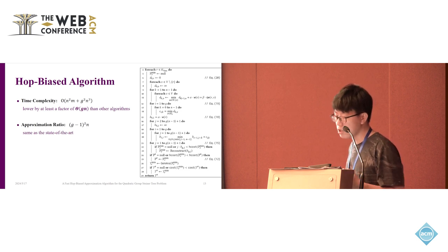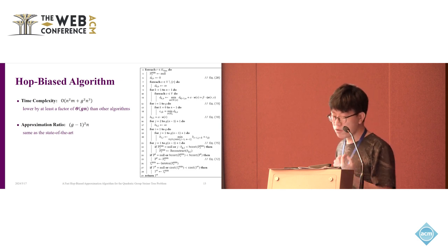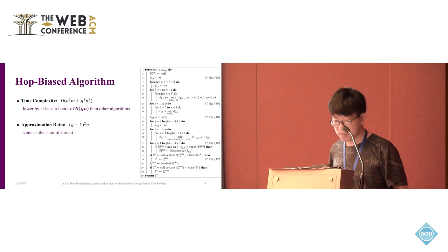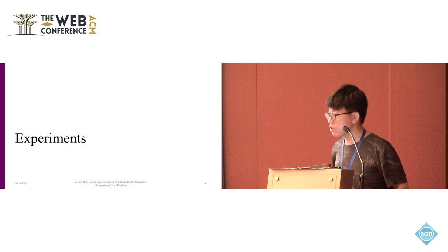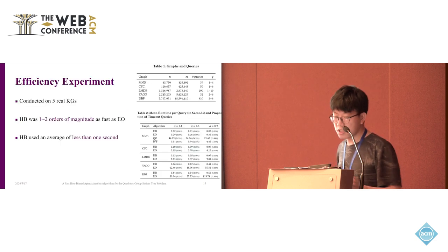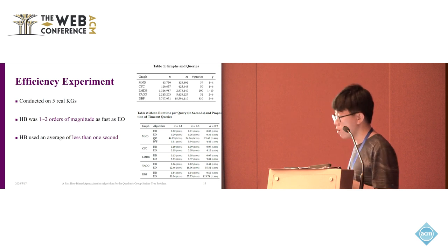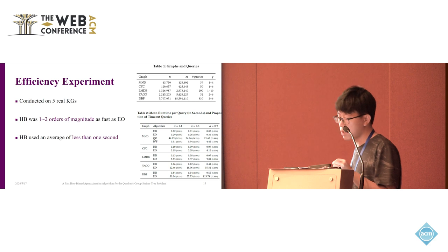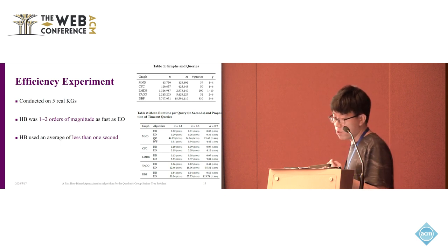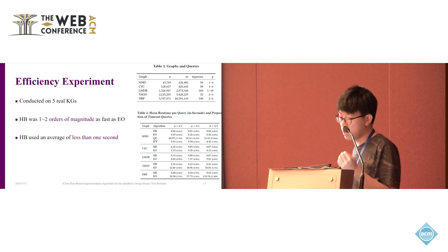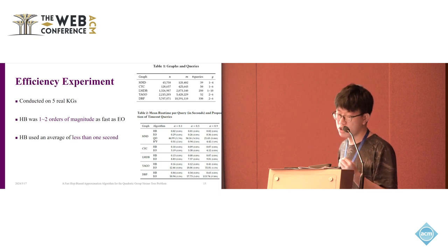In conclusion, the time complexity of the HB algorithm is lower by at least a factor of Gn than other algorithms. We prove that the HB algorithm has the approximation ratio guarantee, which is the same as the state of the art. Next, we conduct a serious experiment to measure the HB algorithm. The first is the efficiency experiment. We conduct this experiment on 5 real KGs, and table 2 shows its mean runtime on these KGs. We can find that HB was one to two orders of magnitude as fast as EO. Furthermore, HB only uses an average of less than one second to answer query on the million-scale KGs, which meets the needs of the fast response time on KG exploration or other real-time applications.